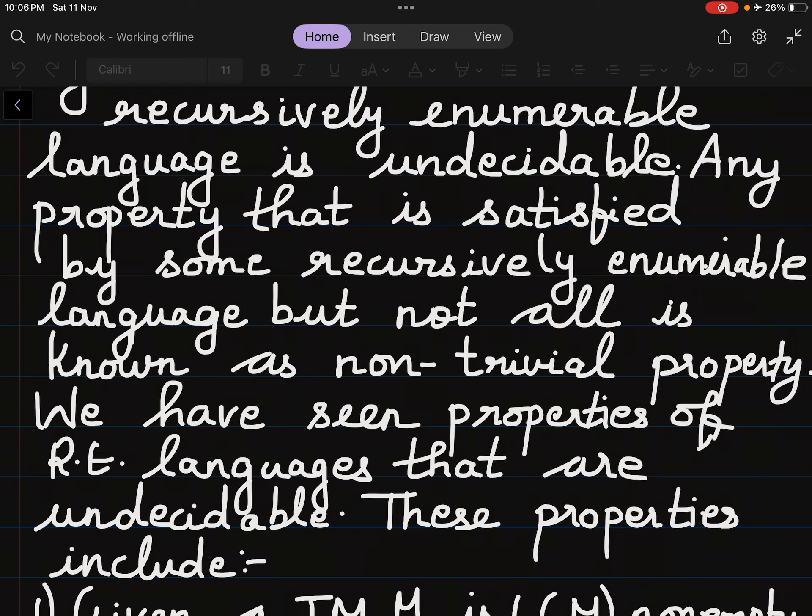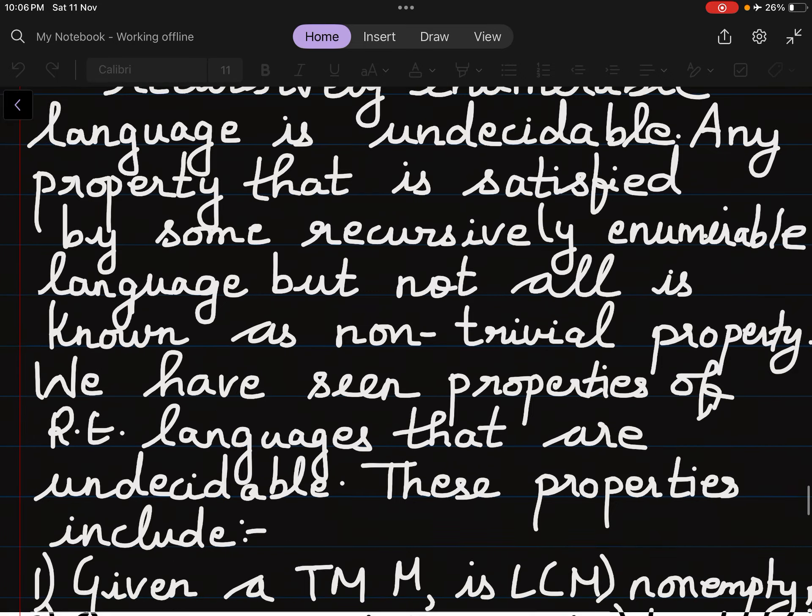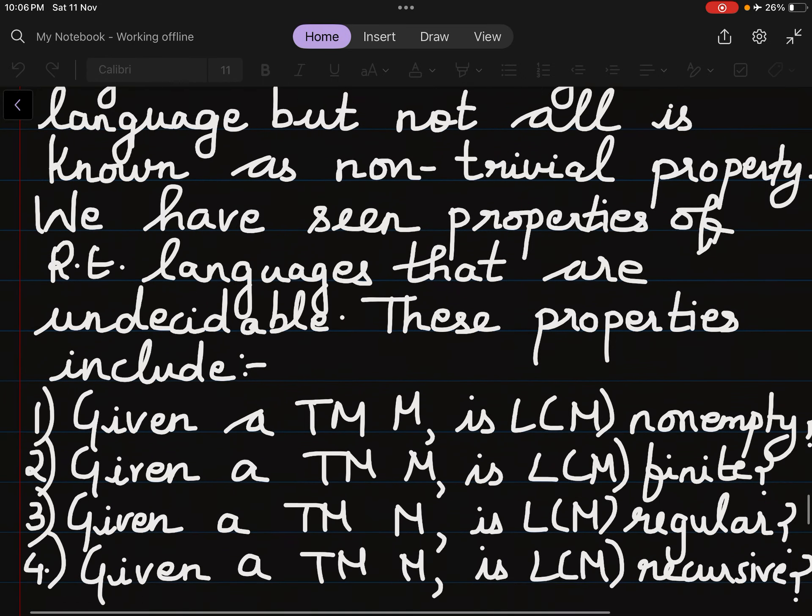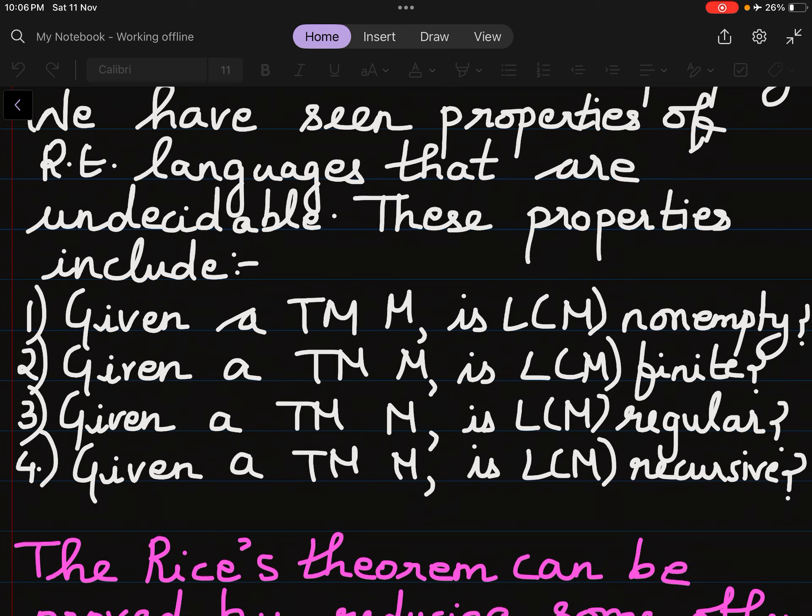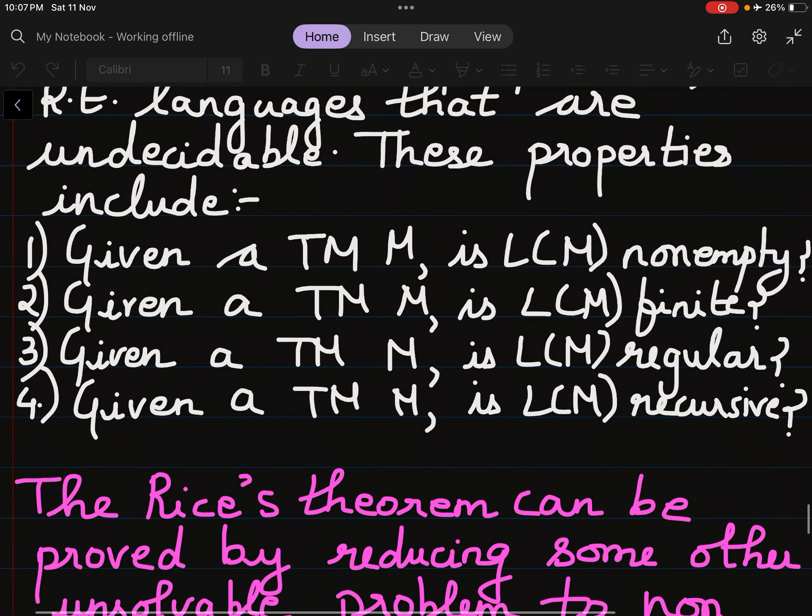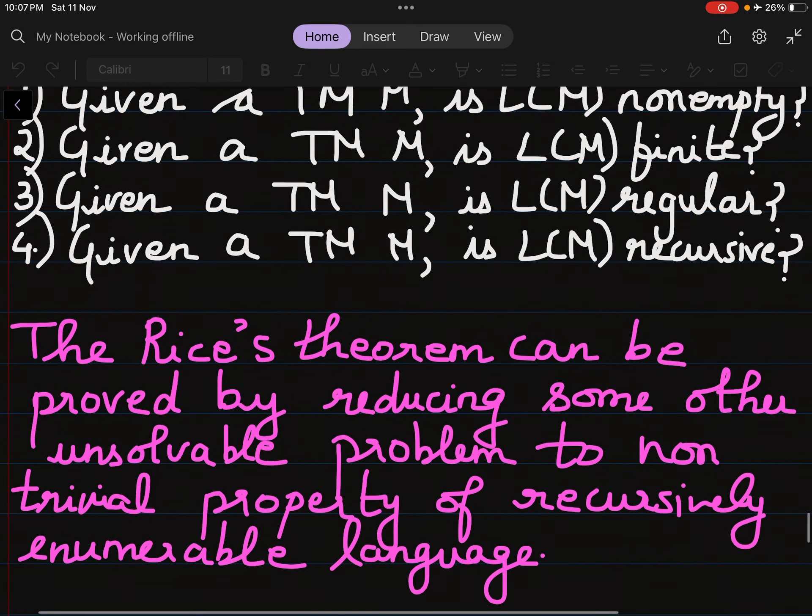We have seen properties of recursively enumerable languages that are undecidable. These properties include: given a Turing machine M, is L(M) non-empty? Given a Turing machine M, is L(M) finite? Given a Turing machine M, is L(M) regular? Given a Turing machine M, is L(M) recursive?